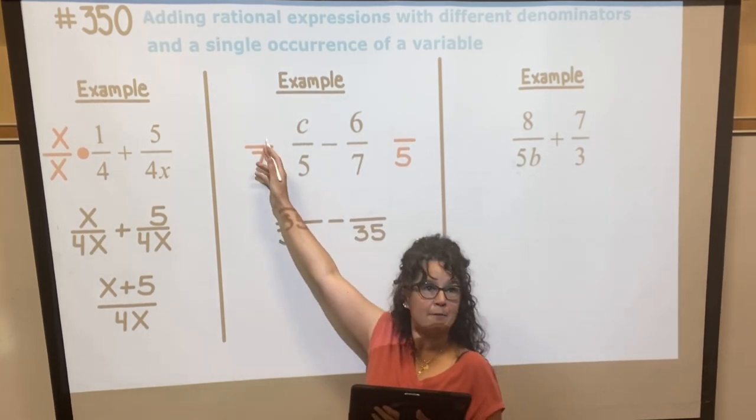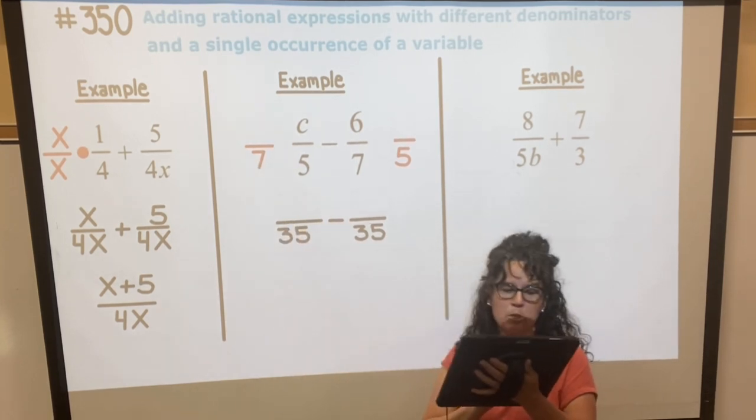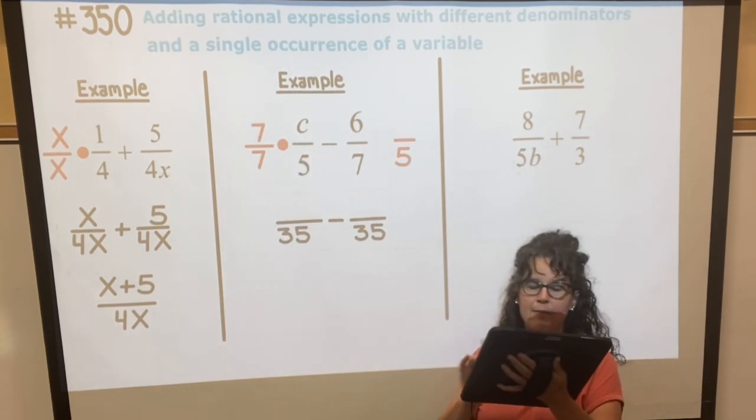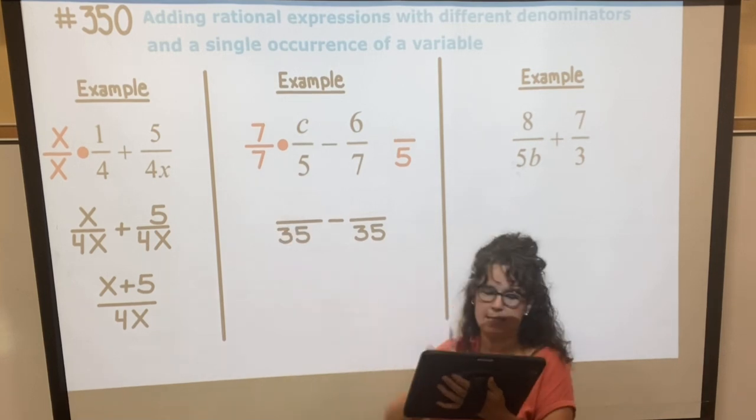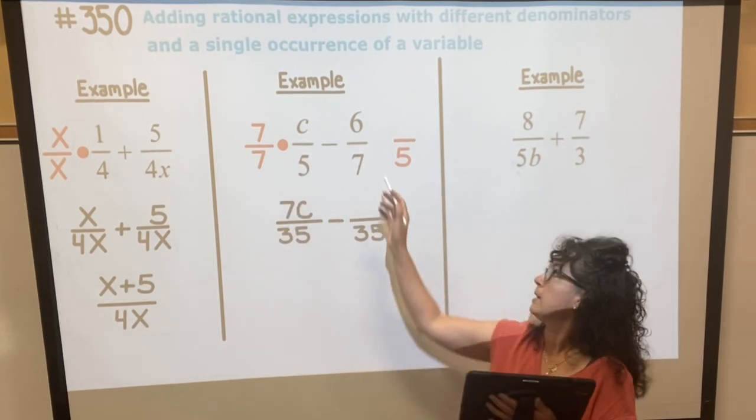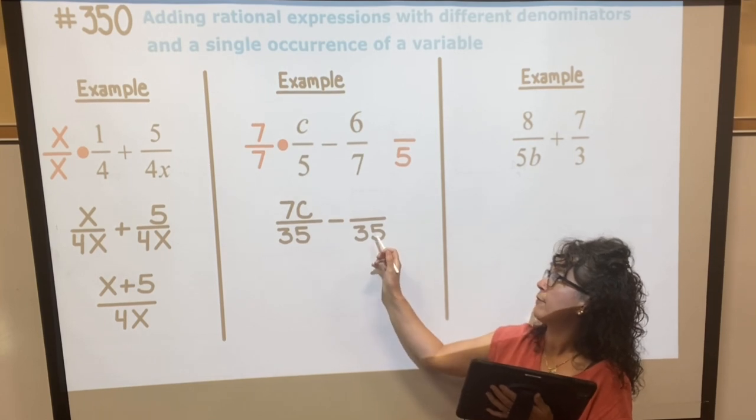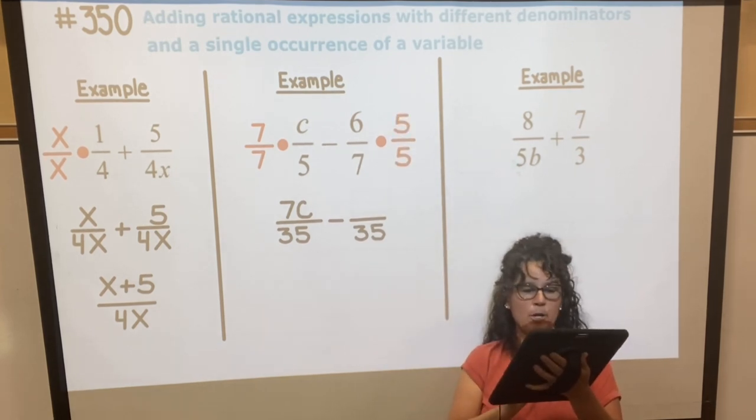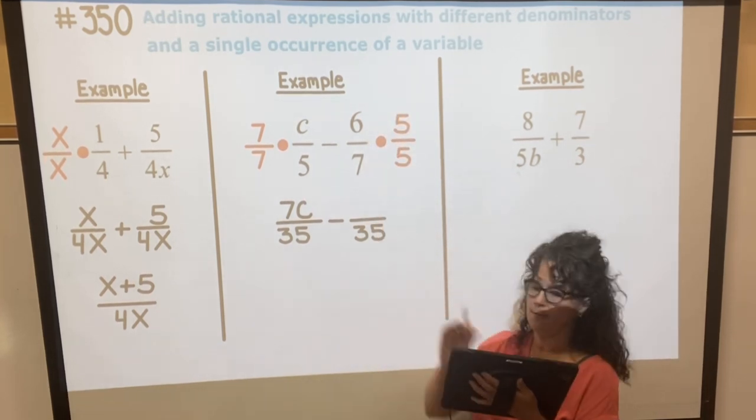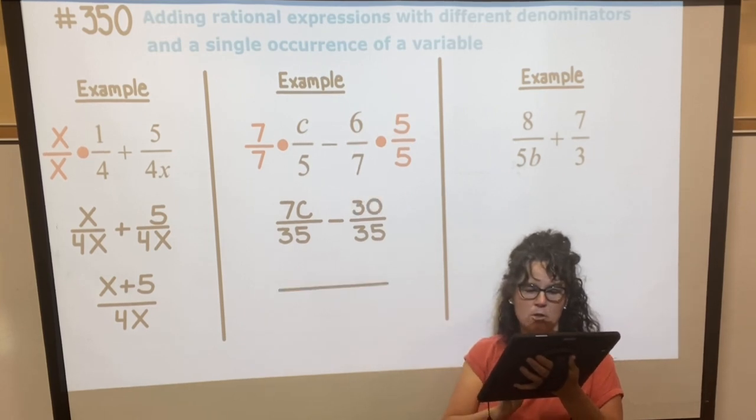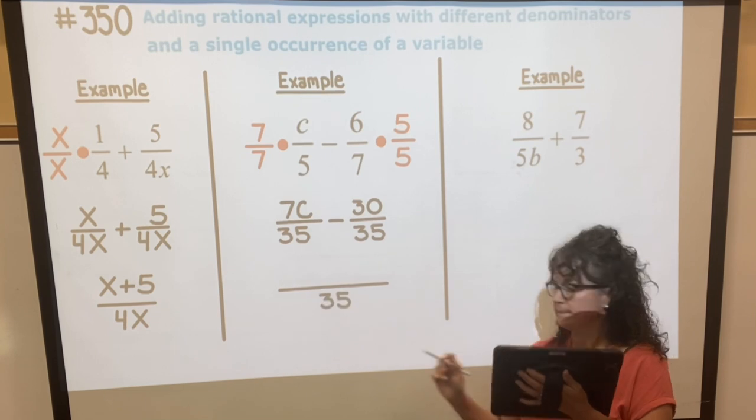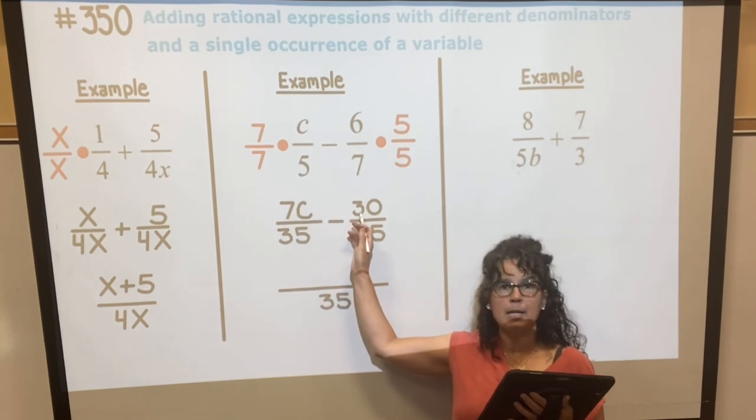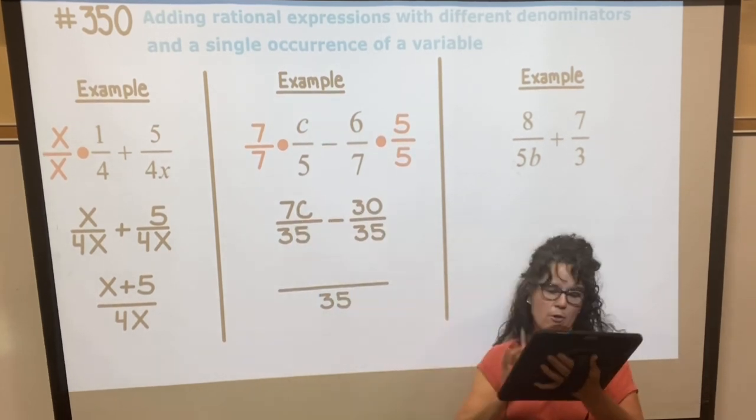Whatever I do to the bottom I have to do to the top. So if I'm going to multiply the denominator by 7, I'm going to also multiply the top by 7, and 7 times c is 7c. 7 times 5 gave me the 35. And if I multiply the denominator by 5, I also need to multiply the numerator by 5, and 6 times 5 is 30. So my final fraction is going to be over 35, the common denominator, and then I'm going to combine these ones, so I have 7c minus 30 for my numerator.